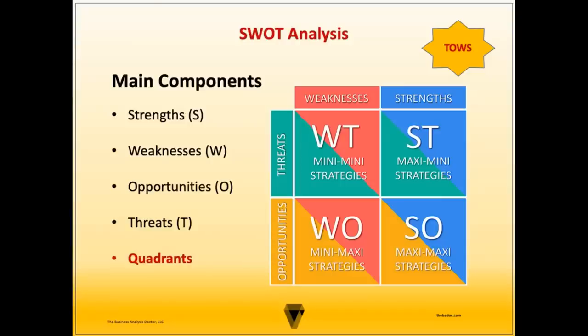Now let's look at an activity called Quadrant Linking. Linking involves pairing items from the internal quadrants to items in the external quadrants, and is often performed in a TOWS analysis. A TOWS analysis is the next step once the SWOT analysis is complete. While SWOT assesses the current situation, TOWS considers the strategic approach for addressing opportunities for improvement. Since only items in the internal quadrants are actionable, they are paired with the external quadrants to facilitate an actionable plan. For optimal results, there should be an equal number of items listed in each quadrant.